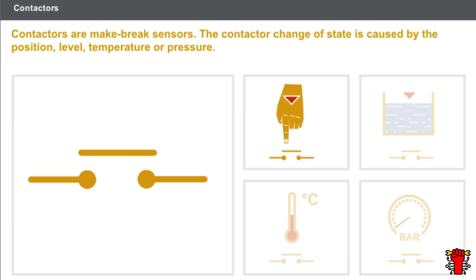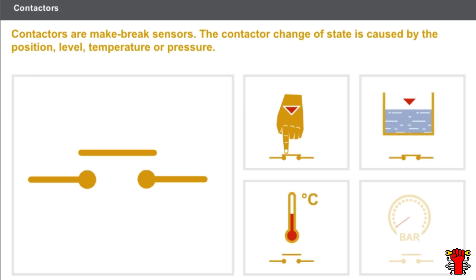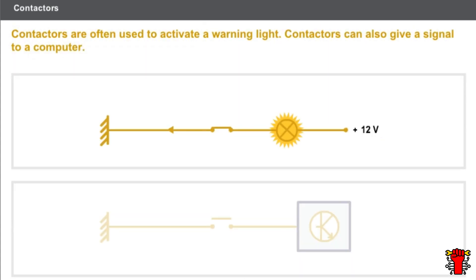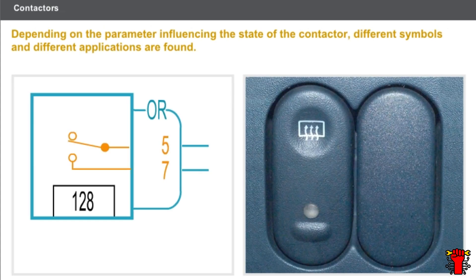The factors causing the contactor's change of state include position, level, temperature, or pressure. Contactors are often used to activate a warning light. Contactors can also give a signal to a computer. Depending on the parameter influencing the state of the contactor, different symbols and different applications are found.